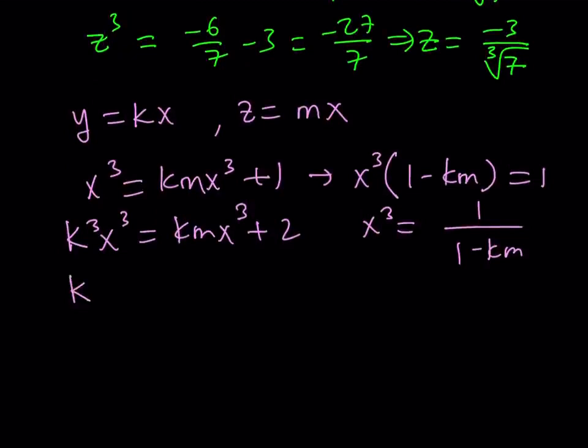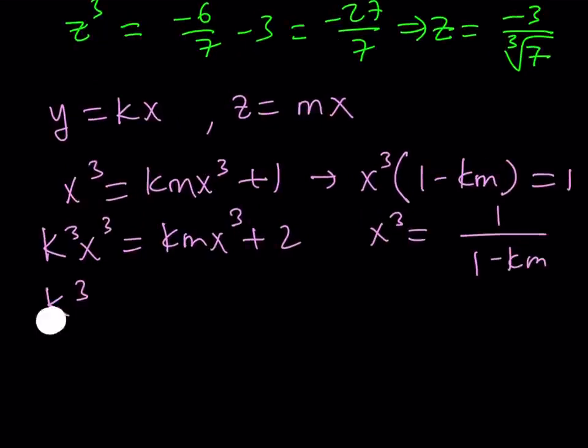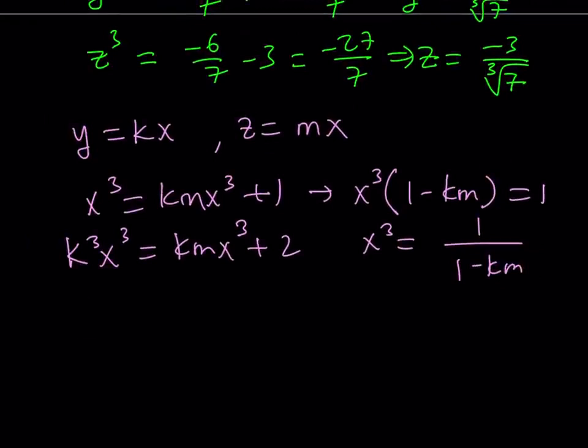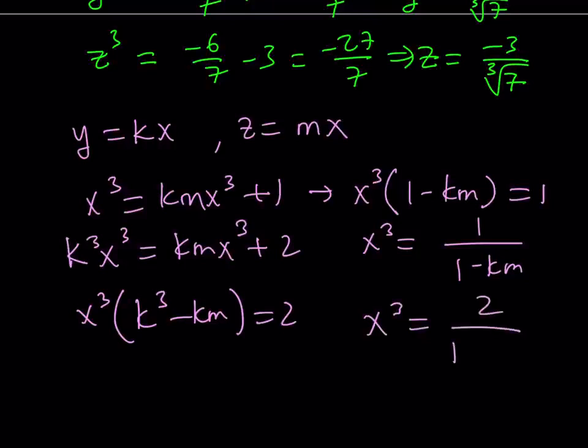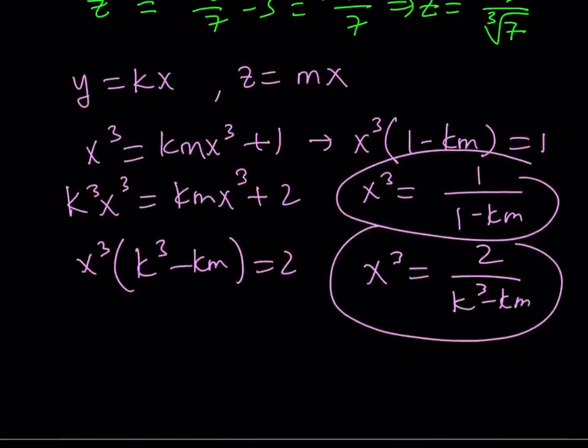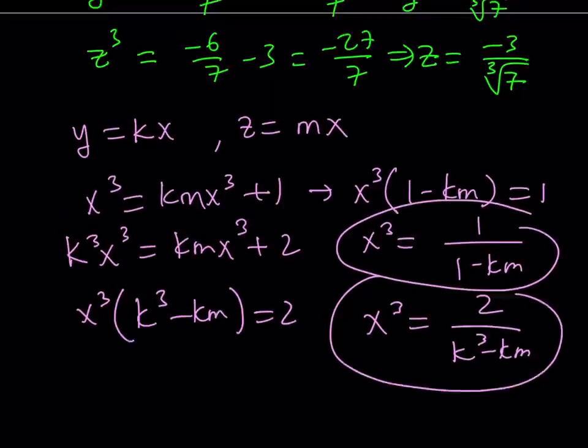From here, you can write x cubed is 1 over 1 minus km. And then from the second equation, if you factor out an x cubed, just like the other one, you should be getting something like k cubed minus km. And that should equal 2. If you divide both sides, then you get 2 over k cubed minus km. And obviously, these are both x cubed values, so you can set them equal to each other. Do the same thing with the third one, and you'll get a system of equations in two variables.